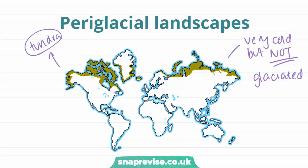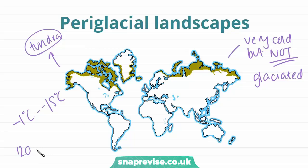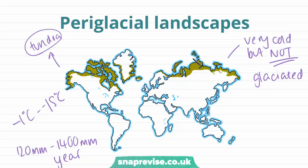These areas are very cold, with temperatures ranging from minus 1 degrees Celsius to minus 15 degrees Celsius, and they have low levels of precipitation too, with about 120 millimetres to 1400 millimetres per year. Now we are going to look at the features of these periglacial landscapes.